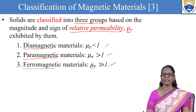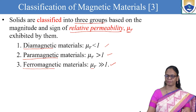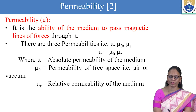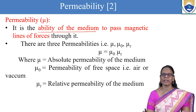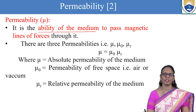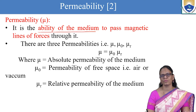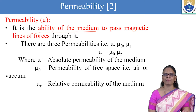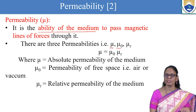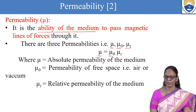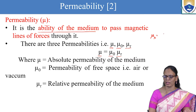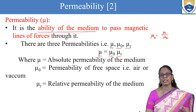Let us understand what permeability and relative permeability are. Permeability is the ability of the medium to pass the magnetic lines of force through it. If permeability values are high, they will easily allow the lines of force to pass through; if less, they will feebly allow them. There are three permeabilities: mu, mu naught, and mu r. Mu equals mu naught times mu r, or mu r equals mu upon mu naught.